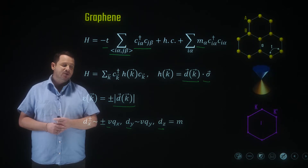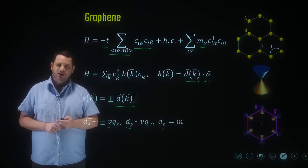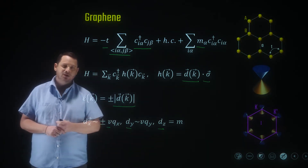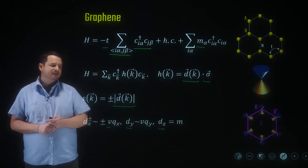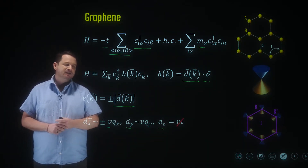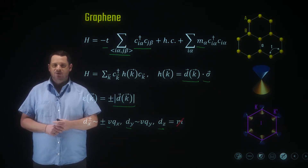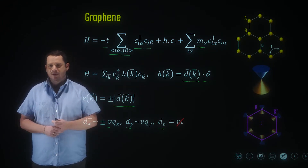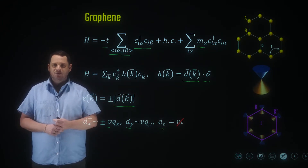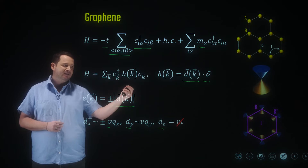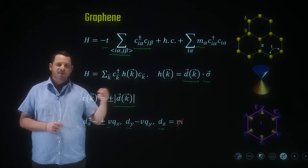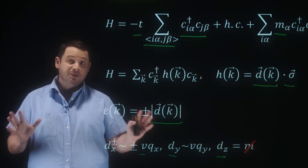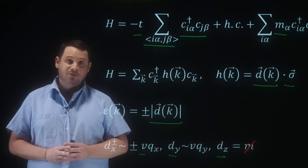However, when we consider graphene, which has a Dirac dispersion — this linear dispersion in momentum — we take this mass term to zero, and from it we get the famous well-known spectrum of graphene, having a Dirac spectrum at the K and K' valleys. So this is the physics of graphene.